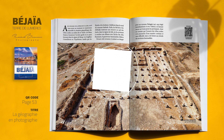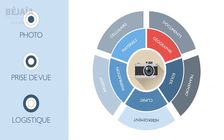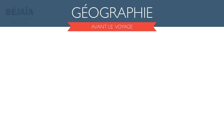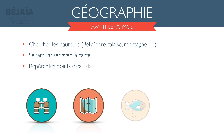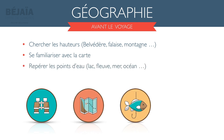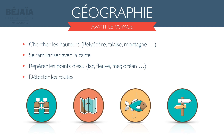Le premier élément de notre deuxième cercle est la géographie de votre destination. Pour cela, on va considérer quatre facteurs. On va chercher les hauteurs, comme les belvédères, les falaises ou encore des montagnes. On va se familiariser avec la carte. On repère les points d'eau afin de les intégrer à nos images — ça peut être des lacs, fleuves, mers ou encore des chutes d'eau. Et en dernier, détecter les routes qui vont nous mener vers nos lieux de prise.